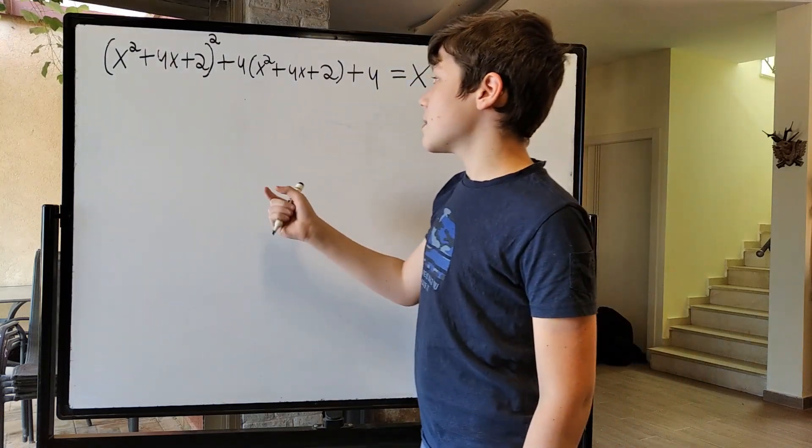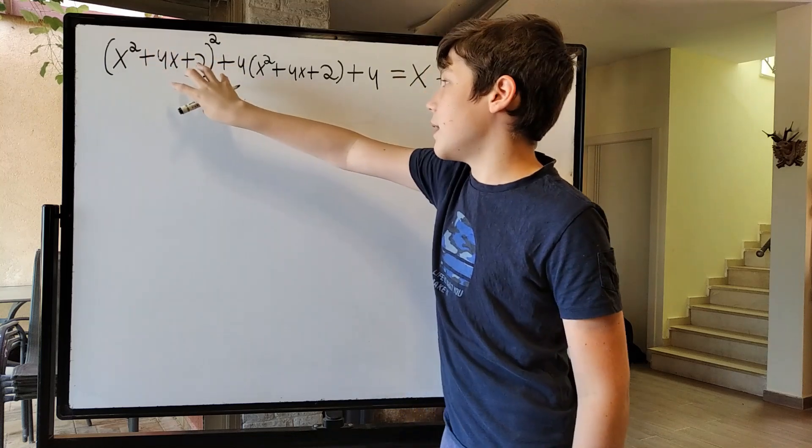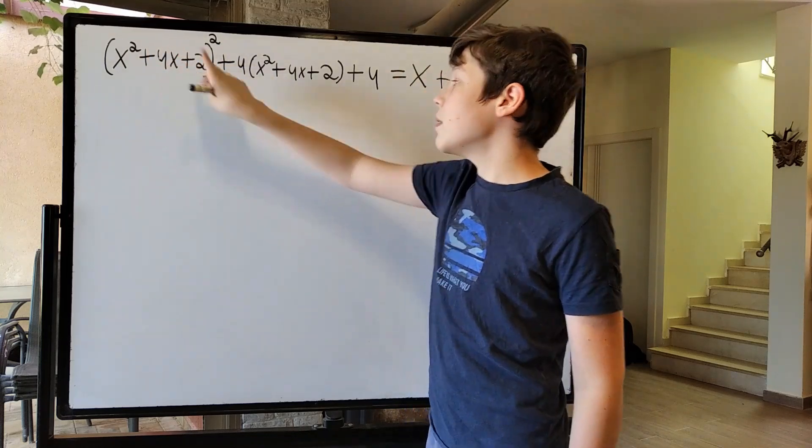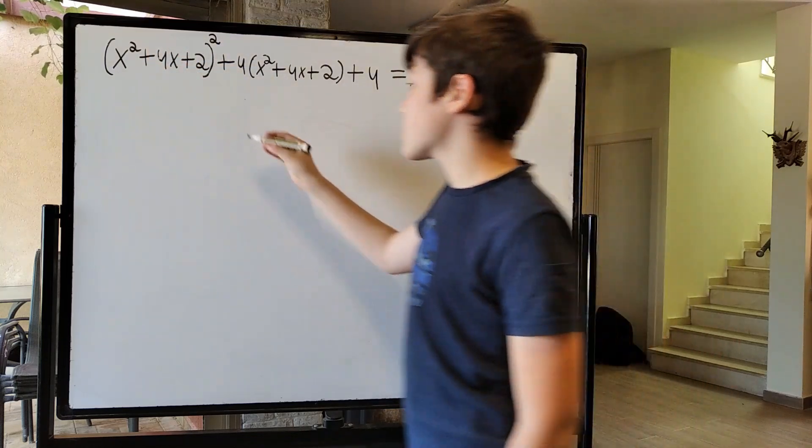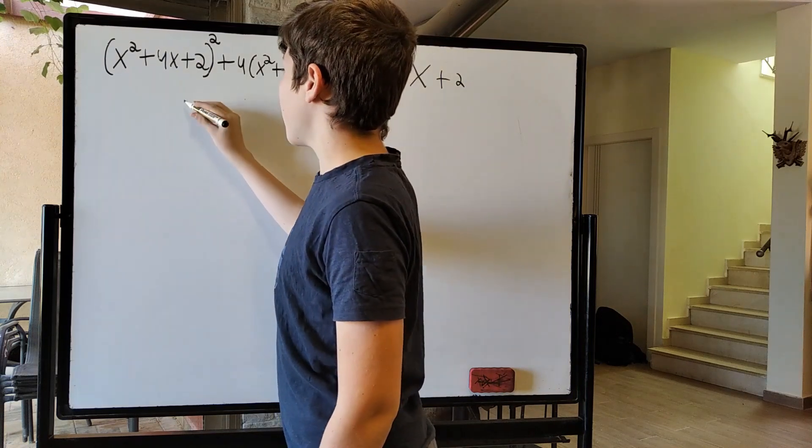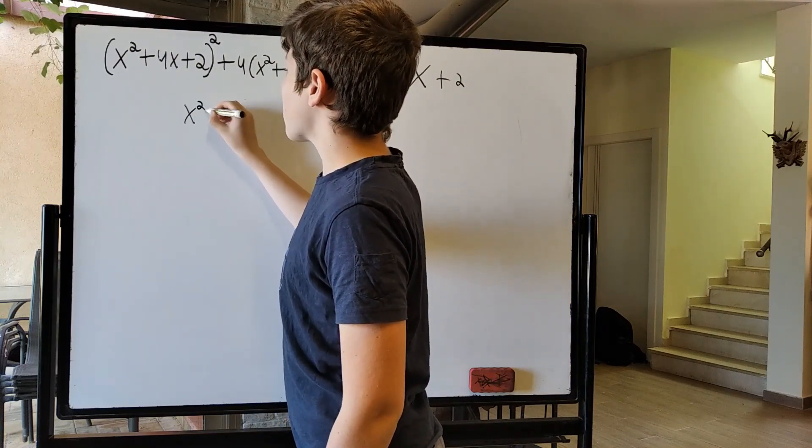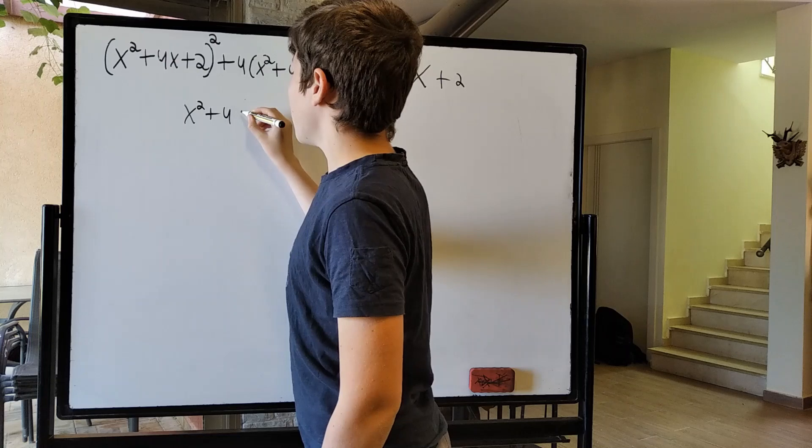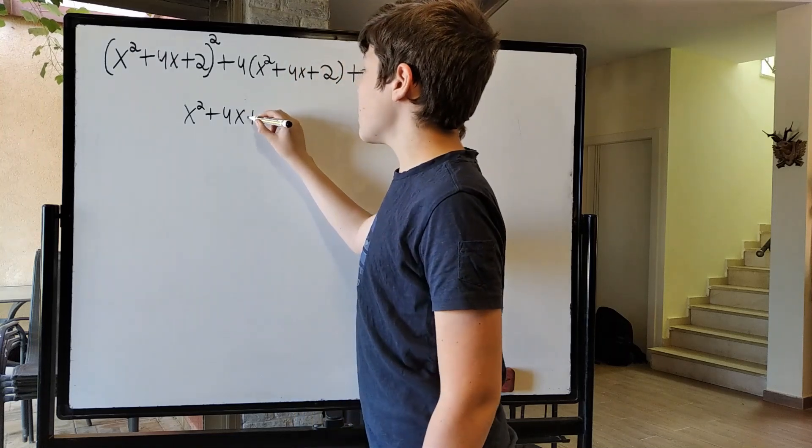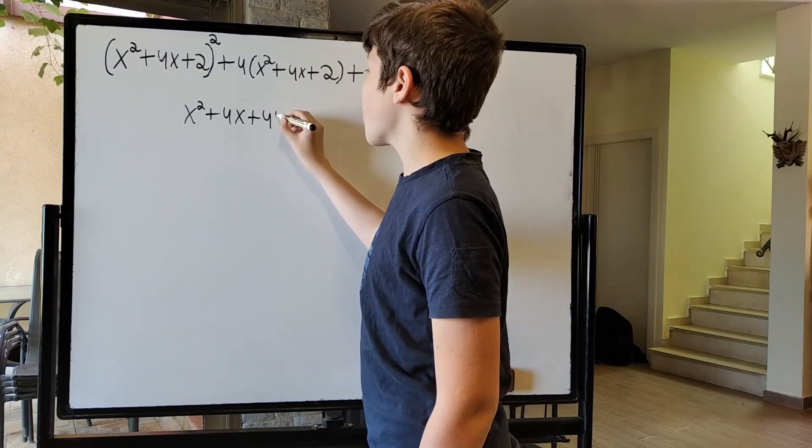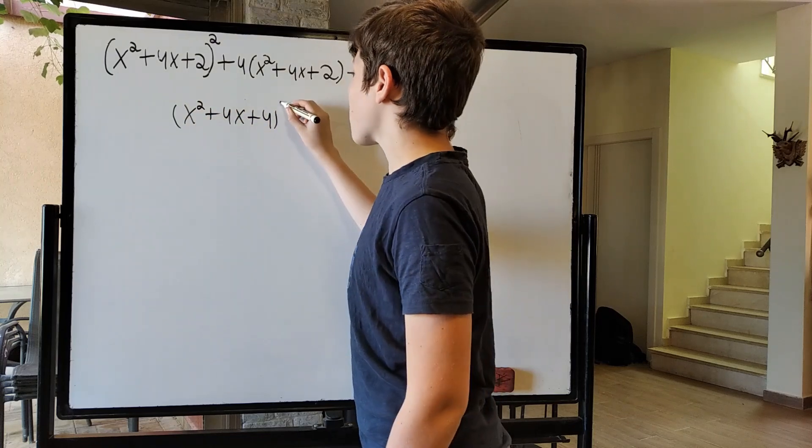Now, again, like we said, this is the something, and this is the parameter here, plus 2, that thing squared. So this thing becomes x squared plus 4x plus 2 plus 2, which is 4, all of this squared.